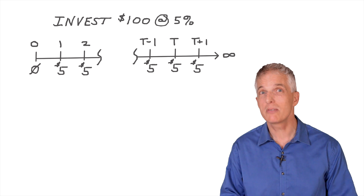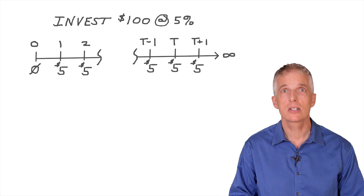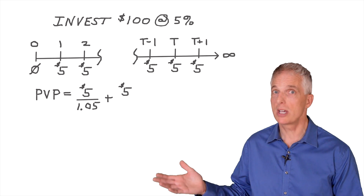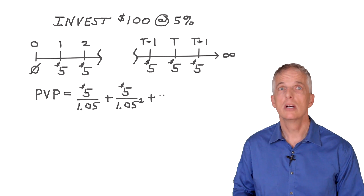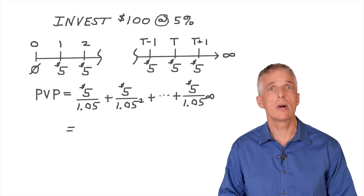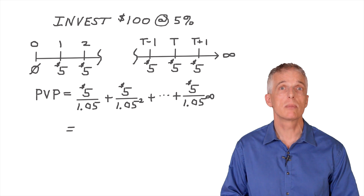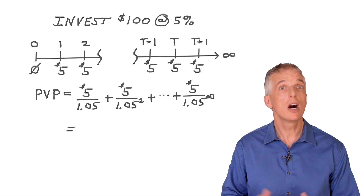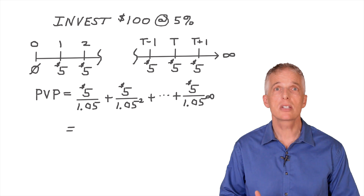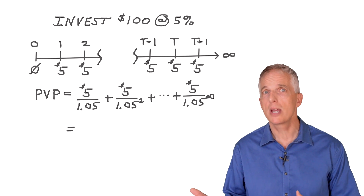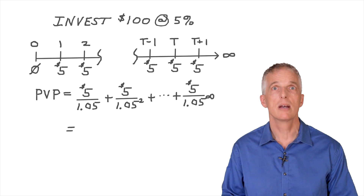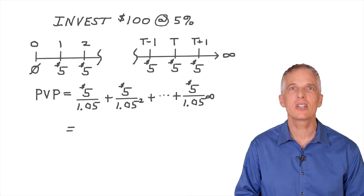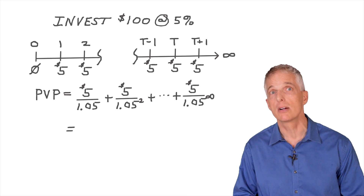What is the present value of the $5 interest payments? We could write this as a standard present value problem, as I've done here. On the left-hand side of the equation, I have the present value of the perpetuity, PVP for short. On the right-hand side, I am discounting all future $5 payments at a 5% interest rate. But the summation never ends, so this is a calculation that I need to think about carefully.